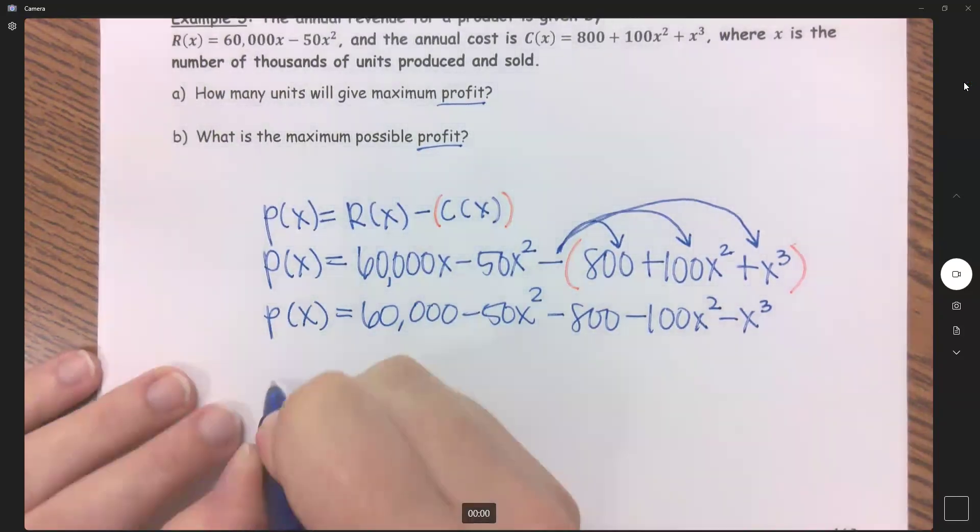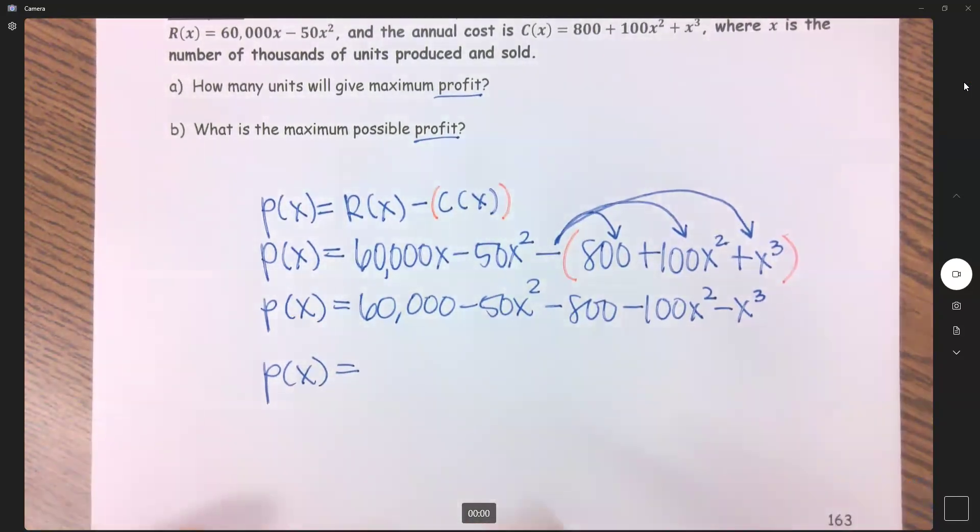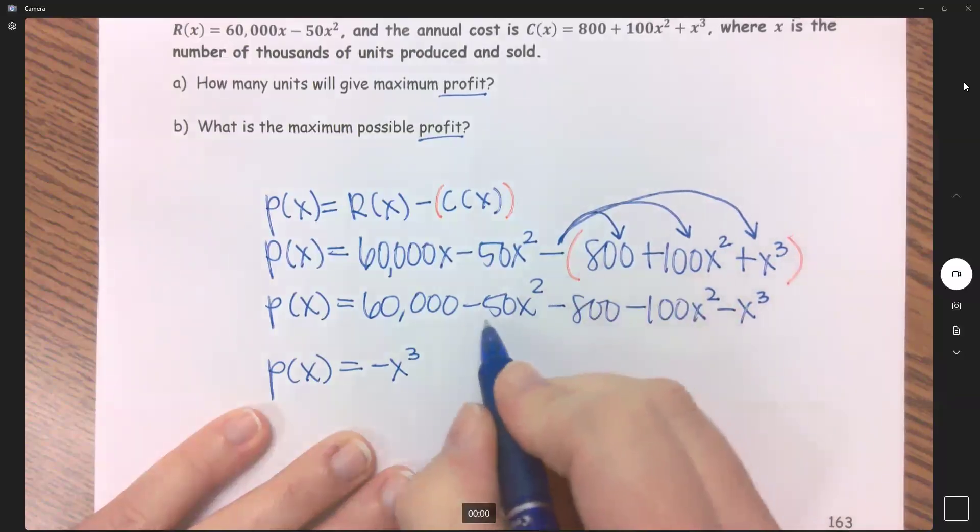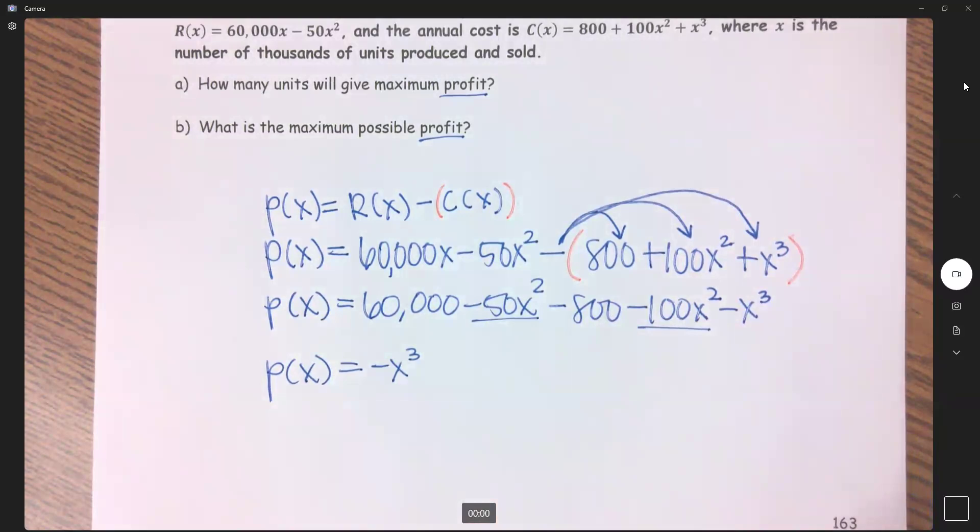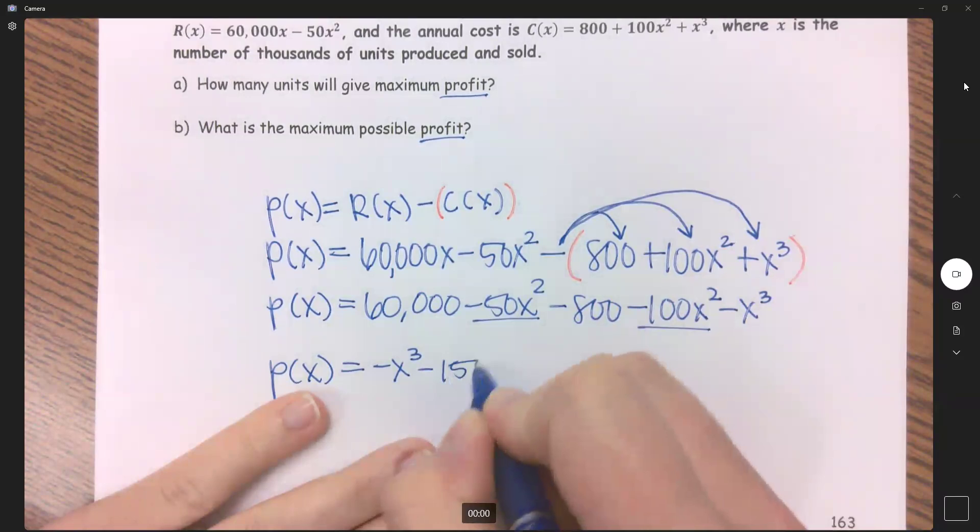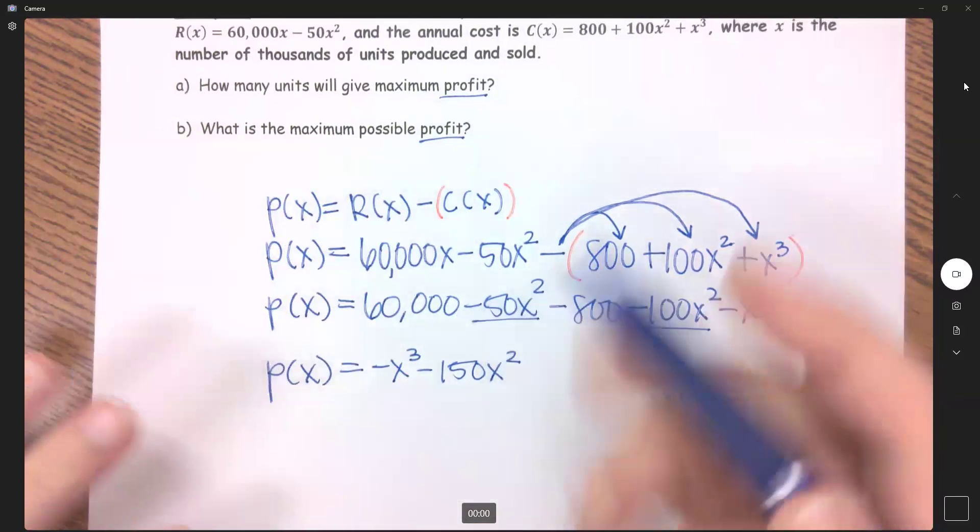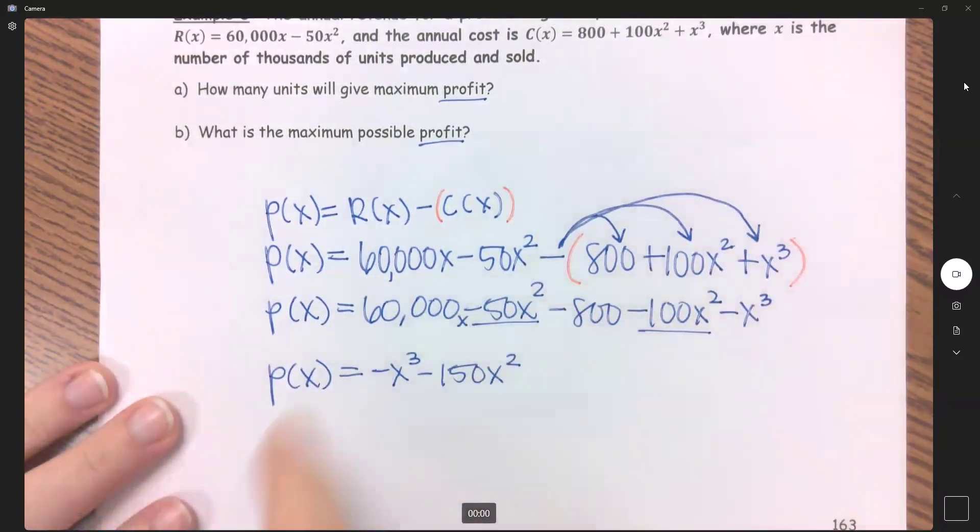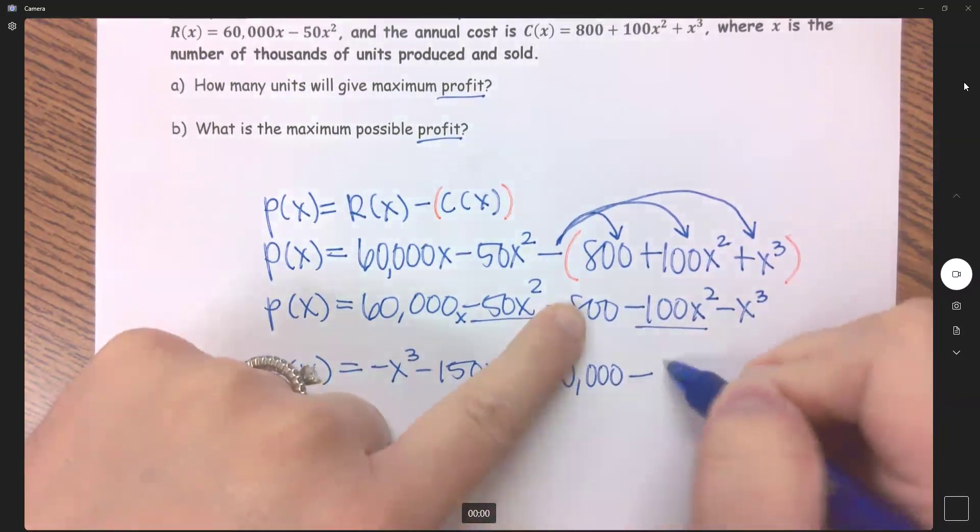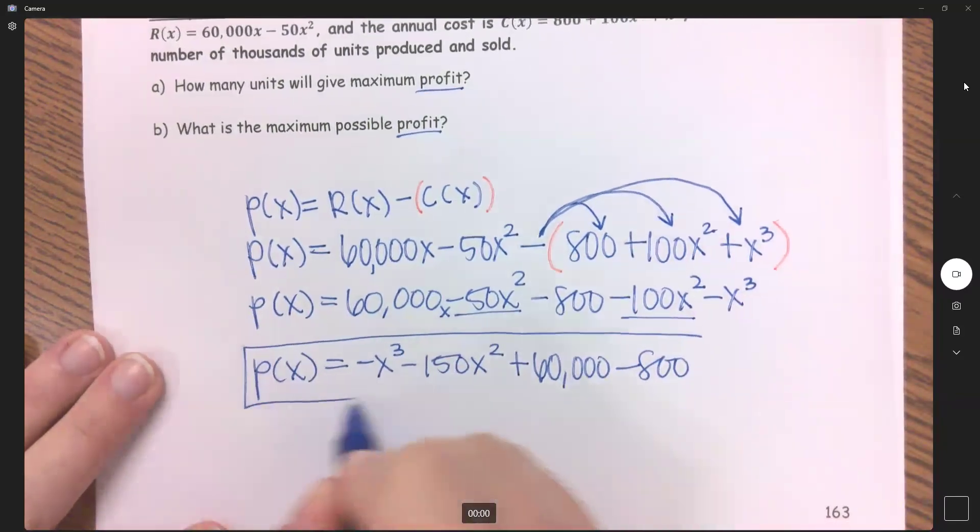So now let's combine our like terms and put this in standard form. I want my x³ first, so we'll do -x³. Now I need my x², so -50 minus 100 is -150x². This is my only x term, 40,000x, and then minus 800. So this is my profit function.